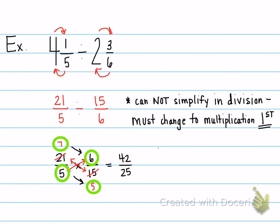At this point, I check if I'm completely simplified. I see that I have an improper fraction. I know 25 goes into 42 one time.